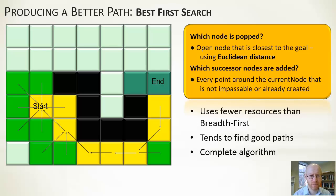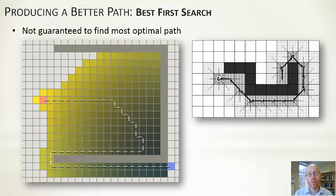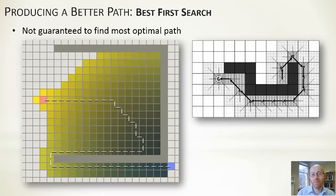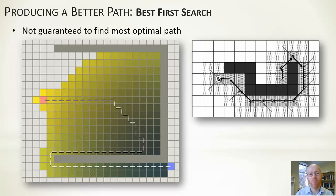On average, best-first search uses much fewer resources than breadth-first and generally finds reasonably acceptable paths. It's a complete algorithm — if there's a path to the target it'll find it. However, it's not without limitations: it can head into a dead end, forcing backtracking. The closest path might require stepping left first, but instead it heads toward the target and gets trapped in a corner of a room before backtracking — not always finding the optimal path.